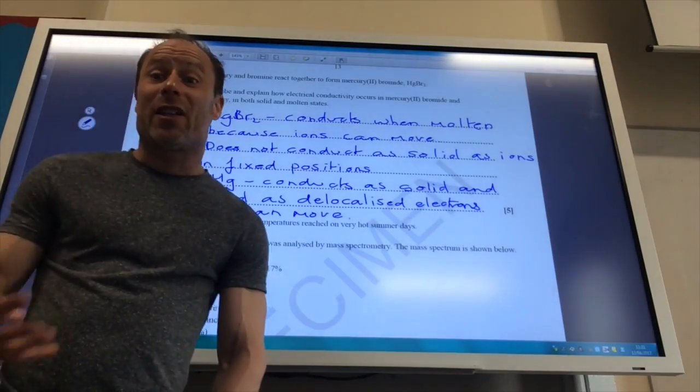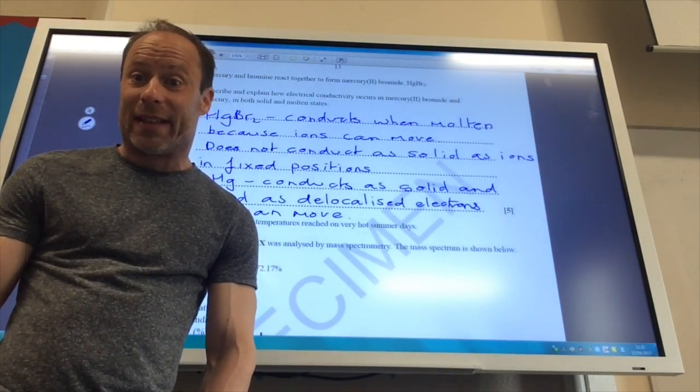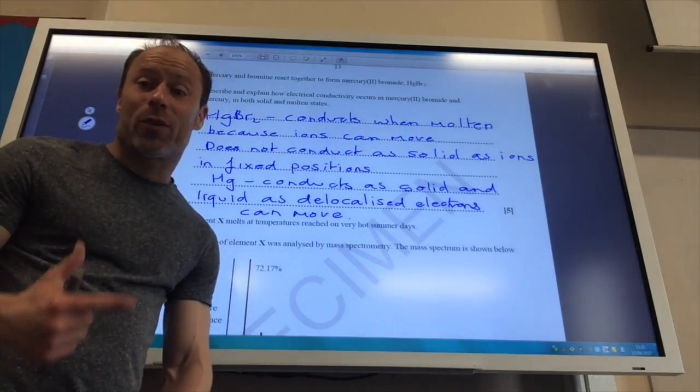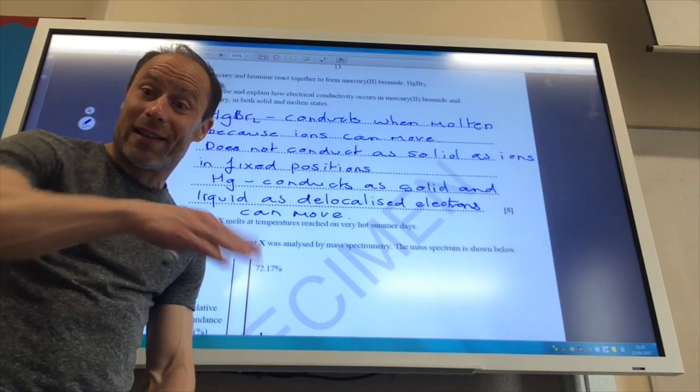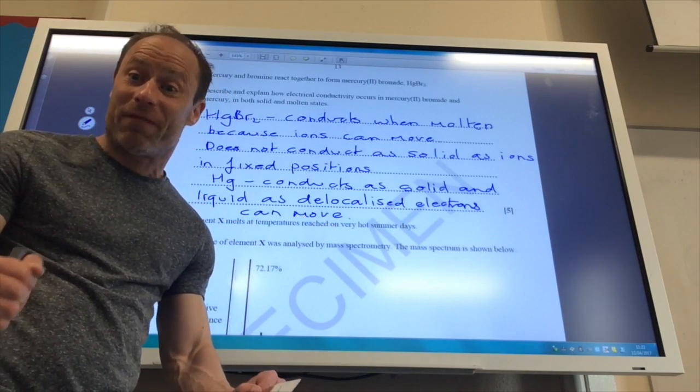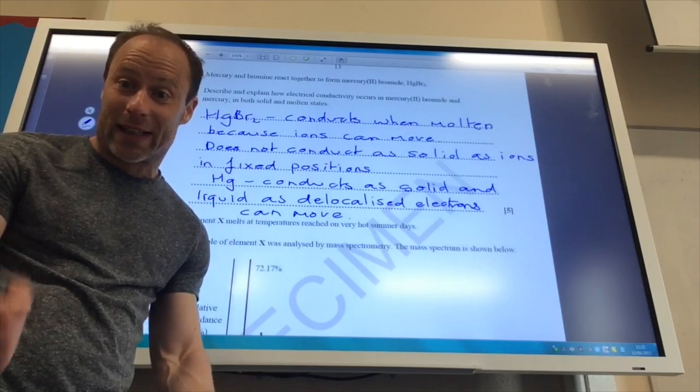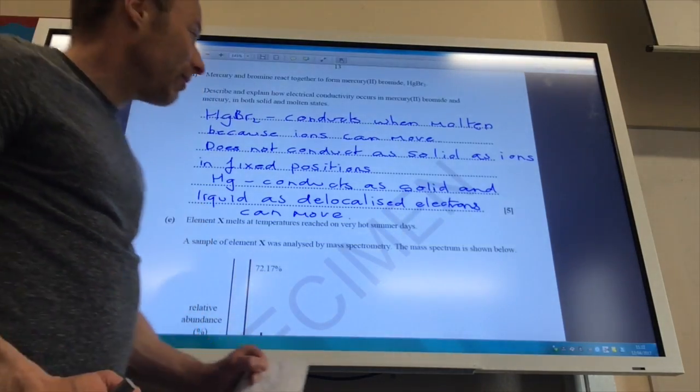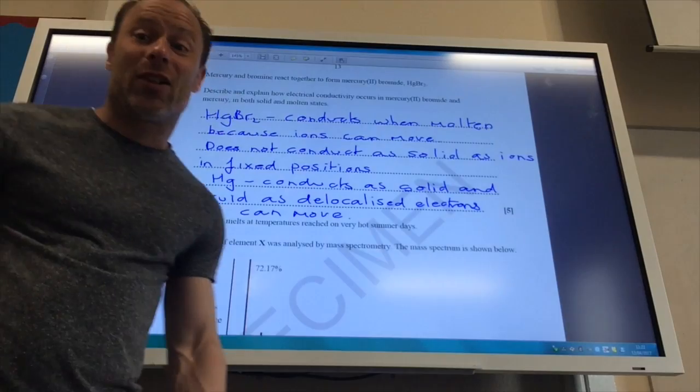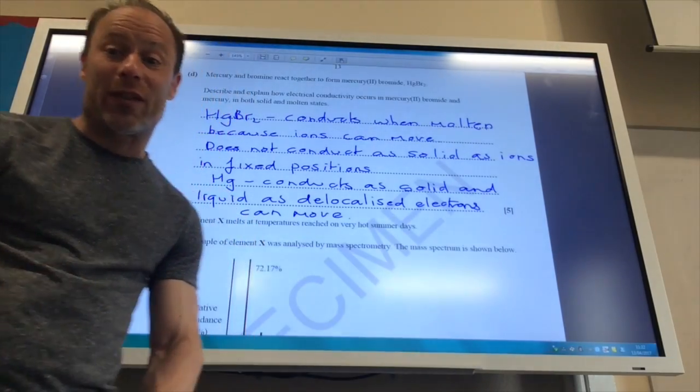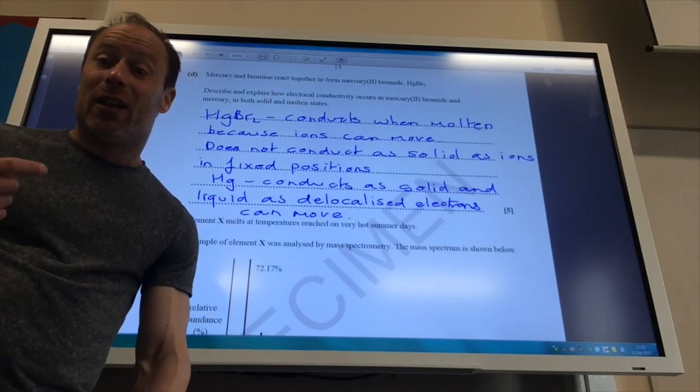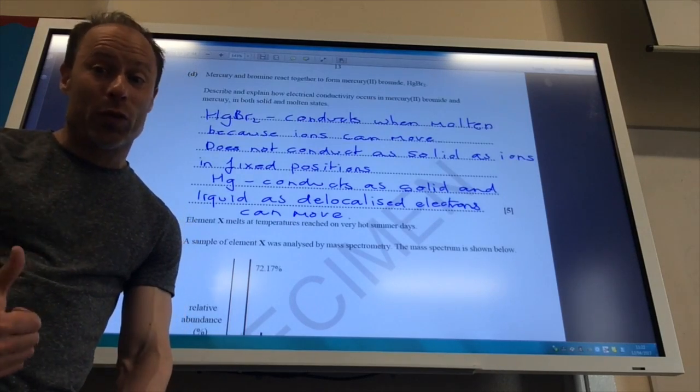Mercury bromide is going to be ionically bonded because it's a metal bonded with a non-metal. So an ionic substance will conduct when molten because the ions can move. But it cannot conduct in the solid state because the ions are in fixed positions in a giant ionic lattice. Mercury however can conduct both as a solid and a liquid because it's got delocalised electrons throughout the structure which can move and therefore carry a current. So you've got to make sure you cover all the points.